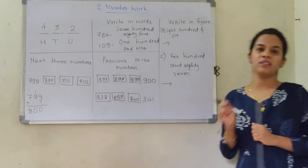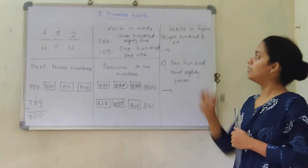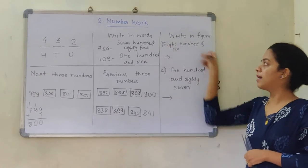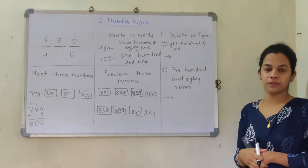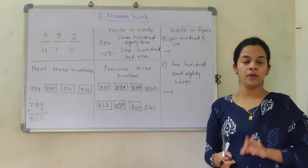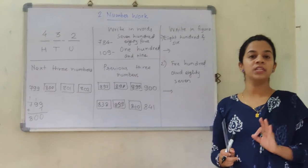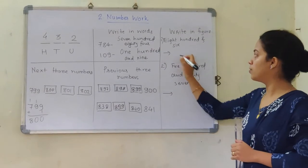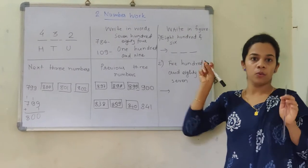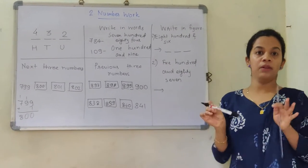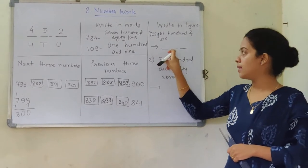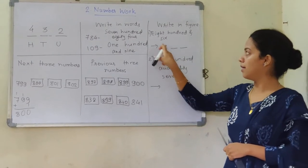We will revise one more concept — write the following in figures. They have told you to write 806. Since the word 'hundred' is used, it will be a 3-digit number with three places: units, tens, and hundreds. Here we have 800, so 8 goes at the hundreds place.